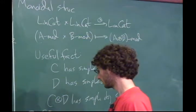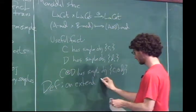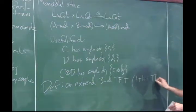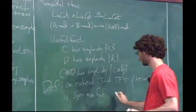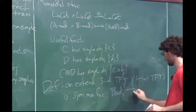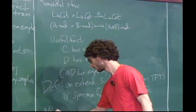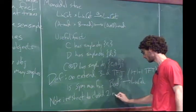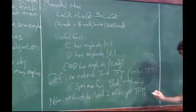With all that in place, we can define an extended 3D TFT — also sometimes called a 1+1+1 dimensional TFT — as a symmetric monoidal functor from Bord_{1,3} into linear categories. If you restrict such a thing to closed two-manifolds, you get an ordinary 2+1 dimensional TFT.